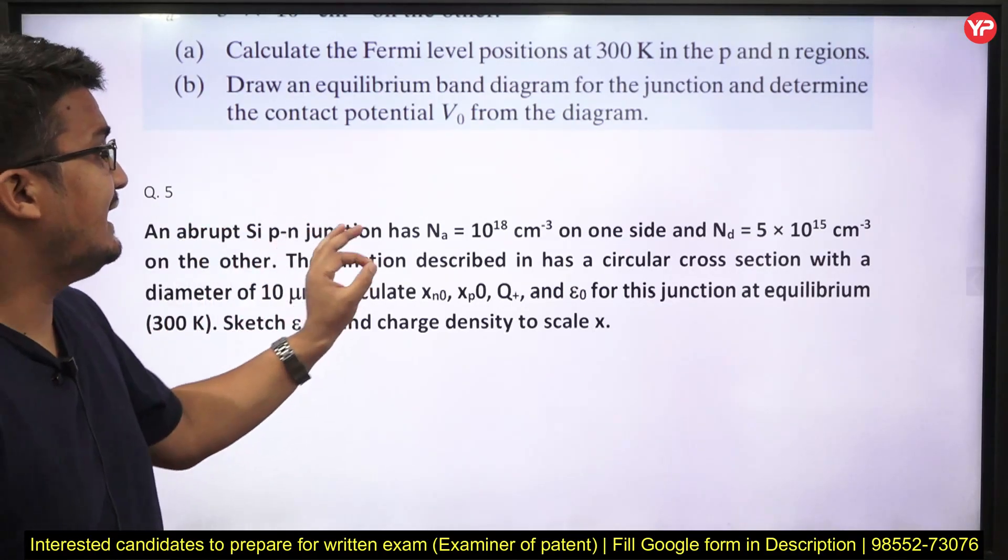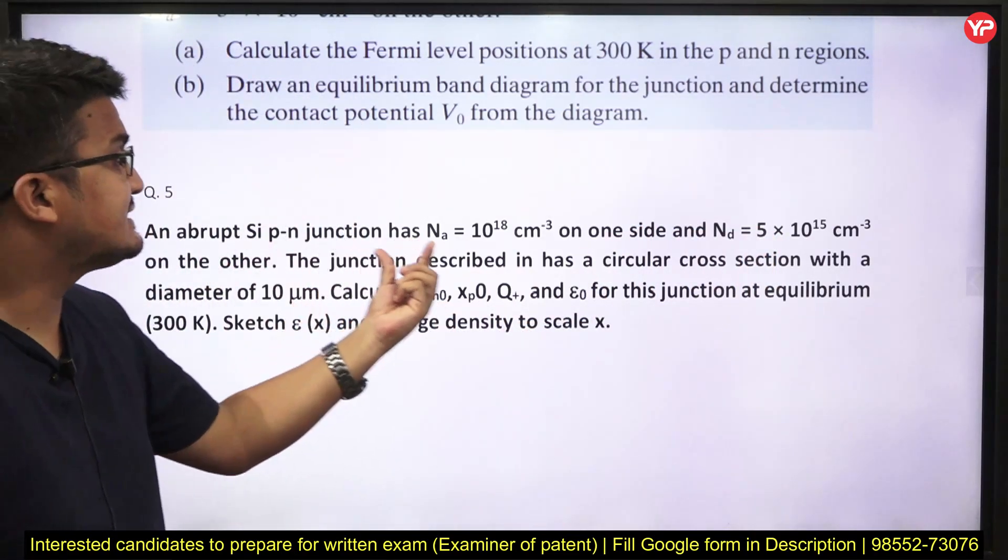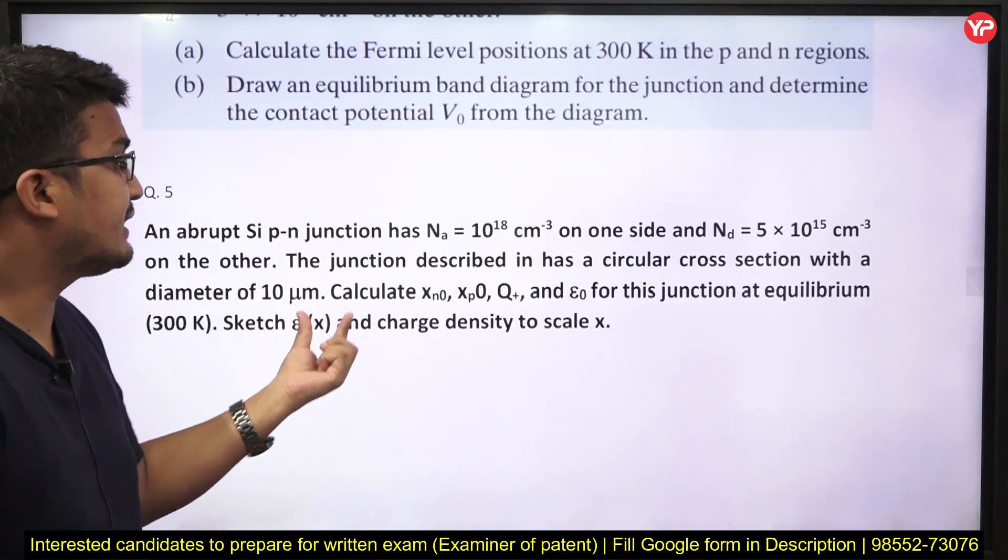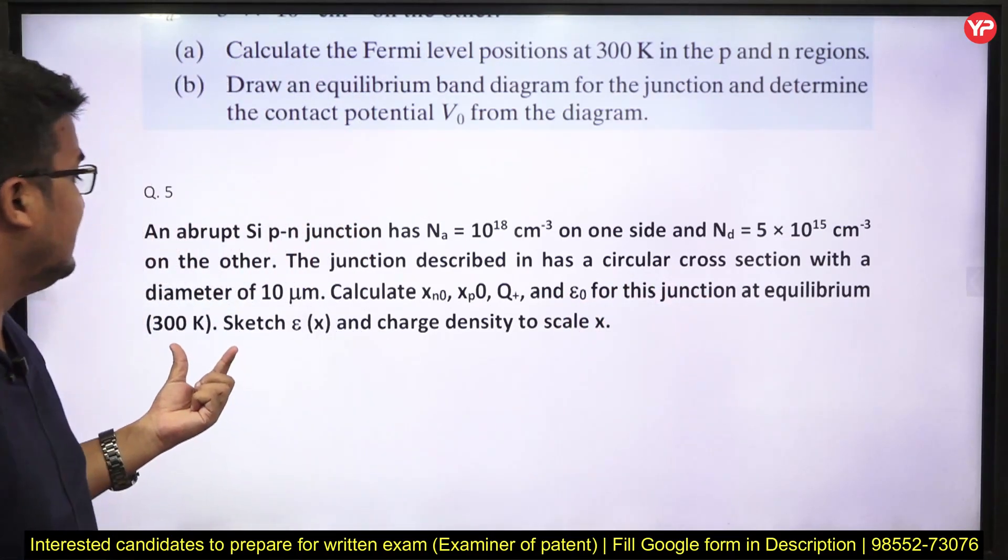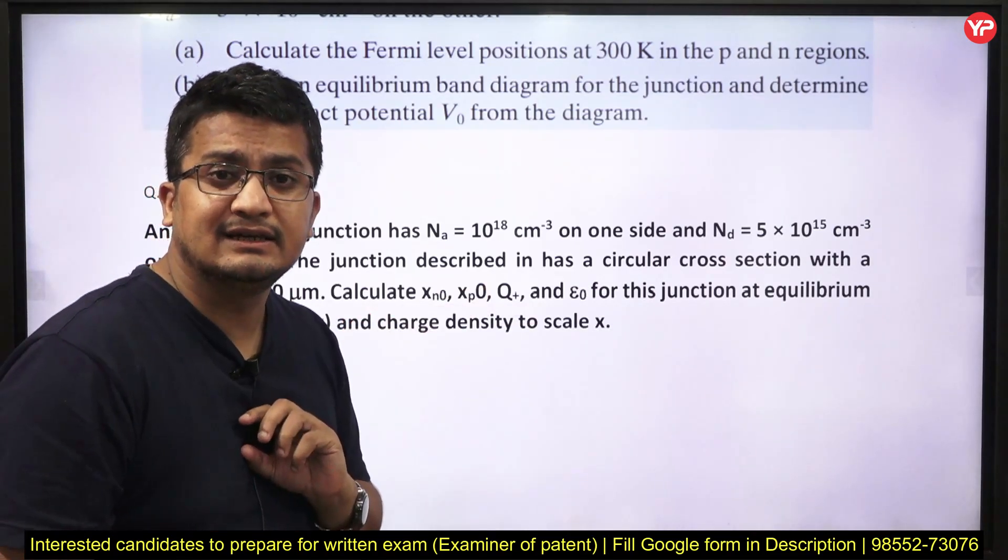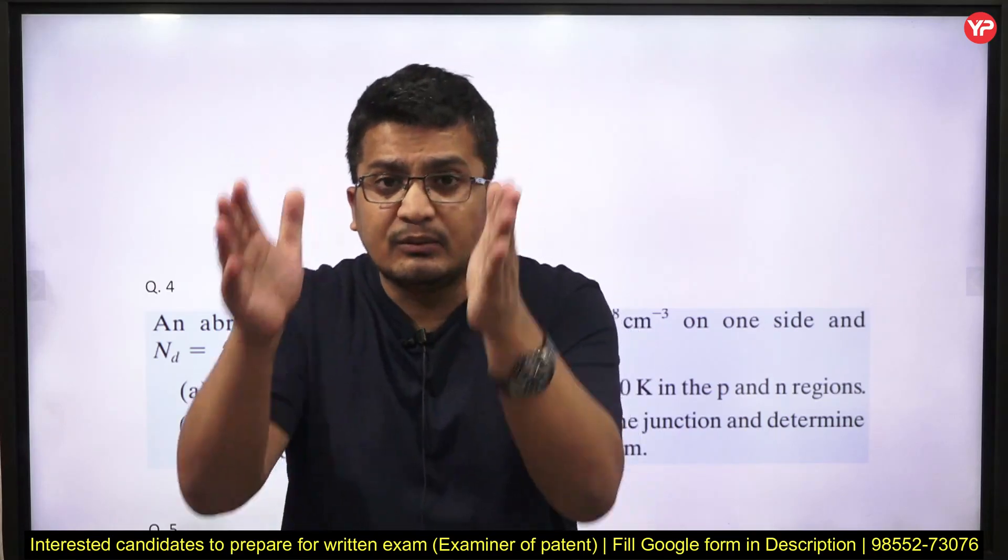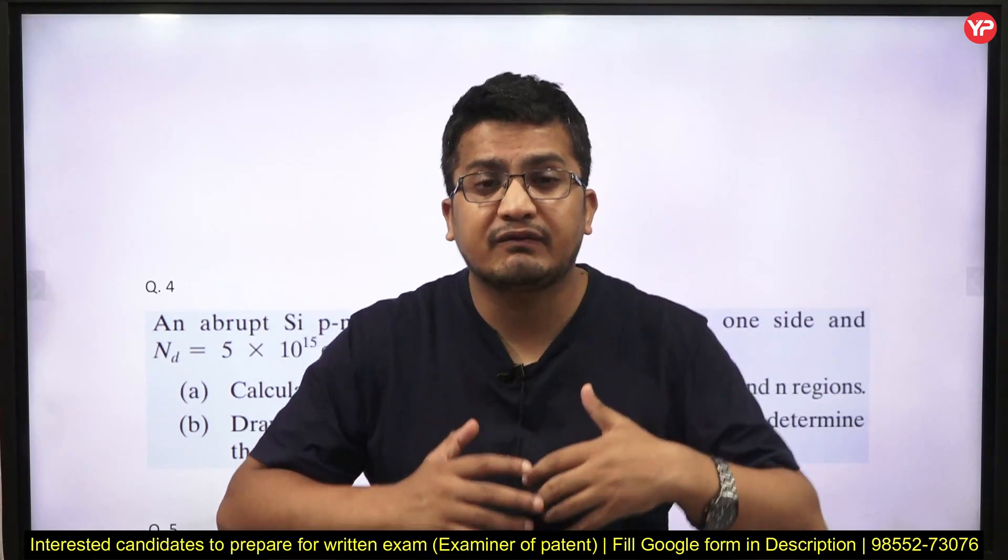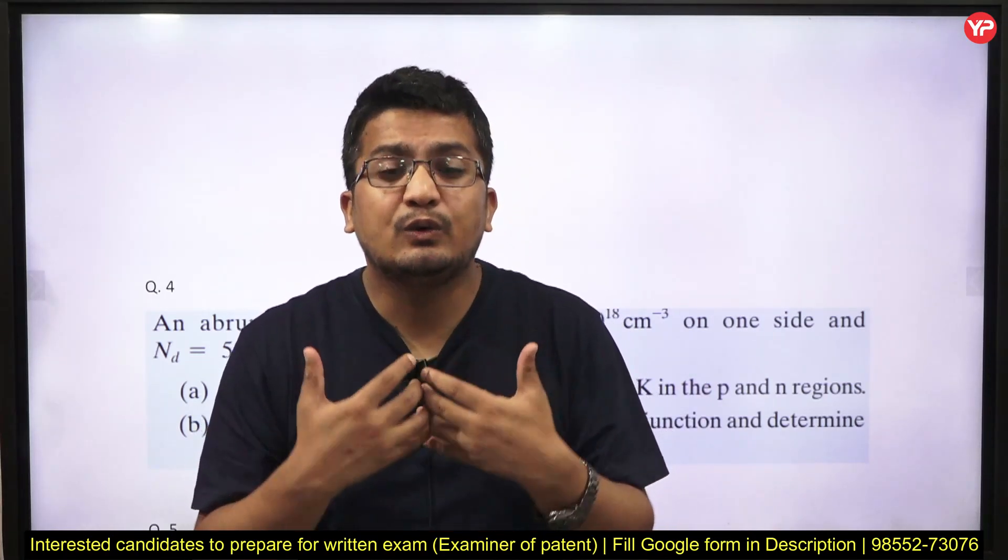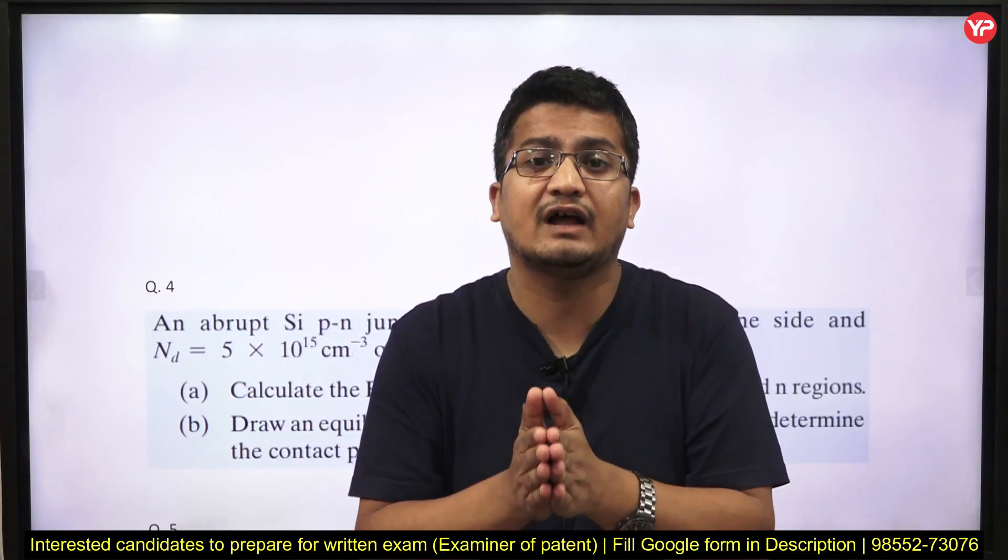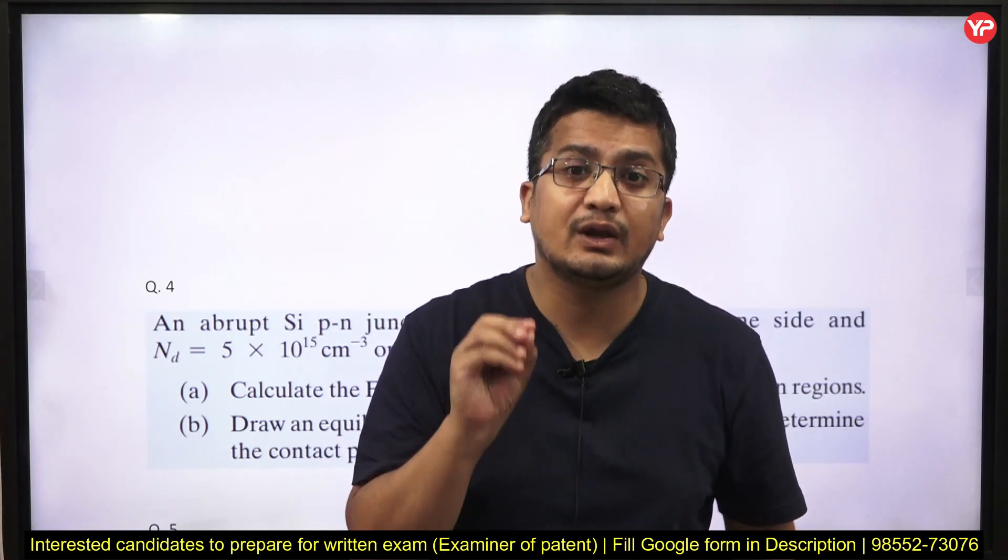Next we have an abrupt silicon PN junction has Na = 10^18, Nd = 5 × 10^15 per cm³. The junction described has a circular cross section with a diameter of 10 micrometers. Calculate Xn₀, calculate Xp₀, calculate Q+, calculate ε₀ for this junction at equilibrium. Calculate electric field as a function of x. Calculate the charge density to scale x. You know whenever there is a junction formation, then definitely there will be depletion layer. In depletion layer, some positive charge accumulates, space charge on one side, negative charge accumulates on the other side. If we see that from the three-dimensional point of view, there will be a charge density. And whenever junction is formed, there is a built-in electric field. He is asking you to calculate those charge density and plot how those charge density around the junction are varying with the scale x. How that built-in electric field is varying with the scale x. These all questions are related to the diode physics and device physics.